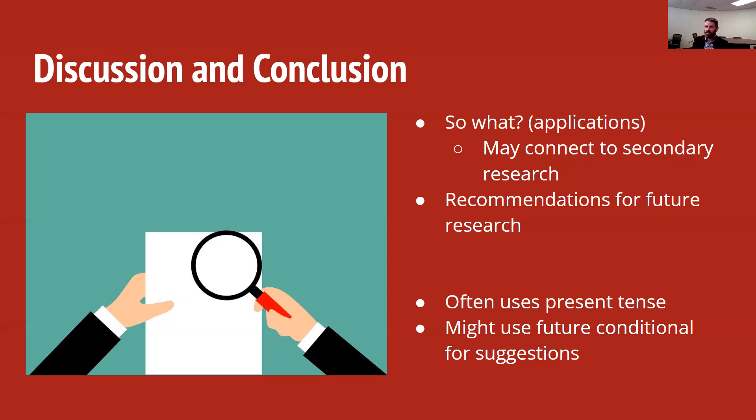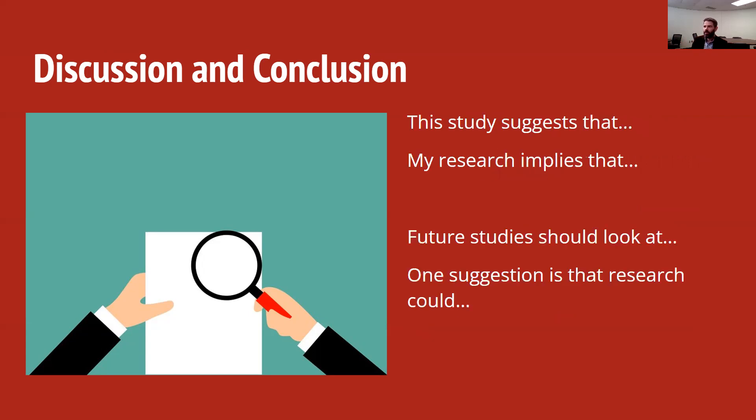In this section, we often use the present tense. We also might use future conditional for talking about suggestions. When we're summarizing our study, we could say this study suggests that. And then we make a connection between what we studied and the real world. How does this matter? Or my research implies that. What should we change about the way we do things in the world?